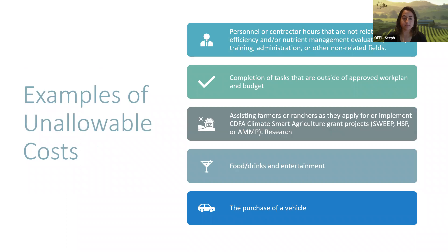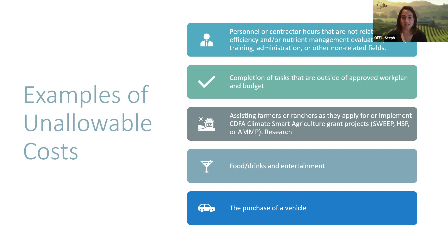Examples of unallowable costs include: personnel or contractor hours not related to water efficiency and/or nutrient management evaluation; audits, training, admin, or non-related fields; completion of tasks outside approved work plan and budget items; assisting farmers or ranchers as they apply or implement projects for SWEEP, Healthy Soils Program, or AMP; research; food, drinks, and entertainment — even if hosting workshops or webinars, these are not allowable; and the purchase of a vehicle.